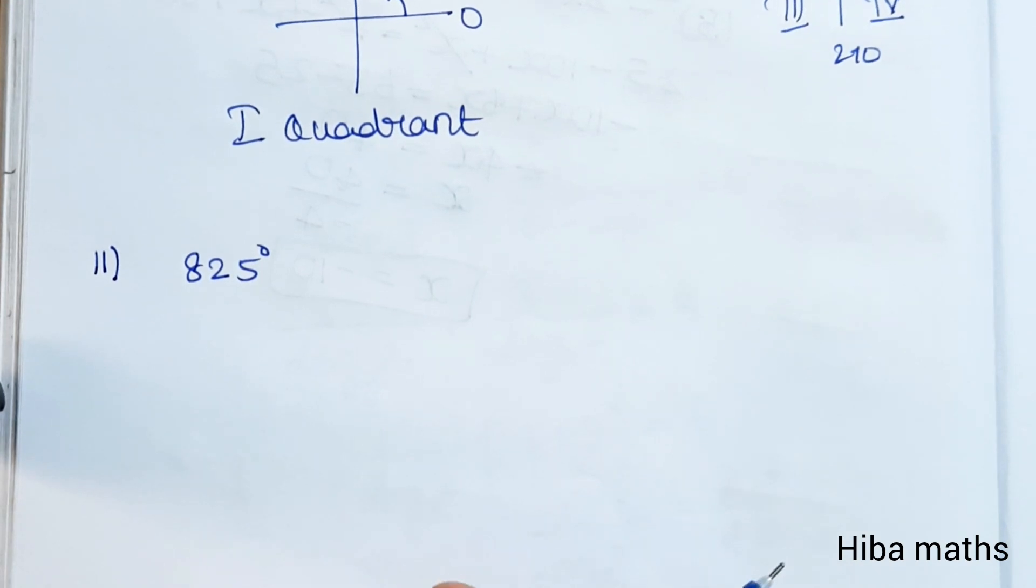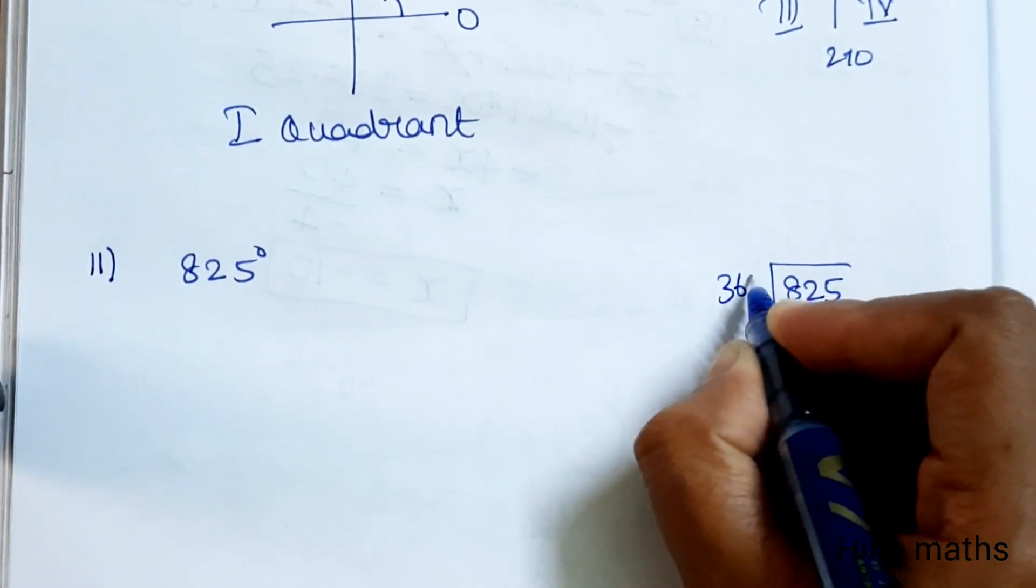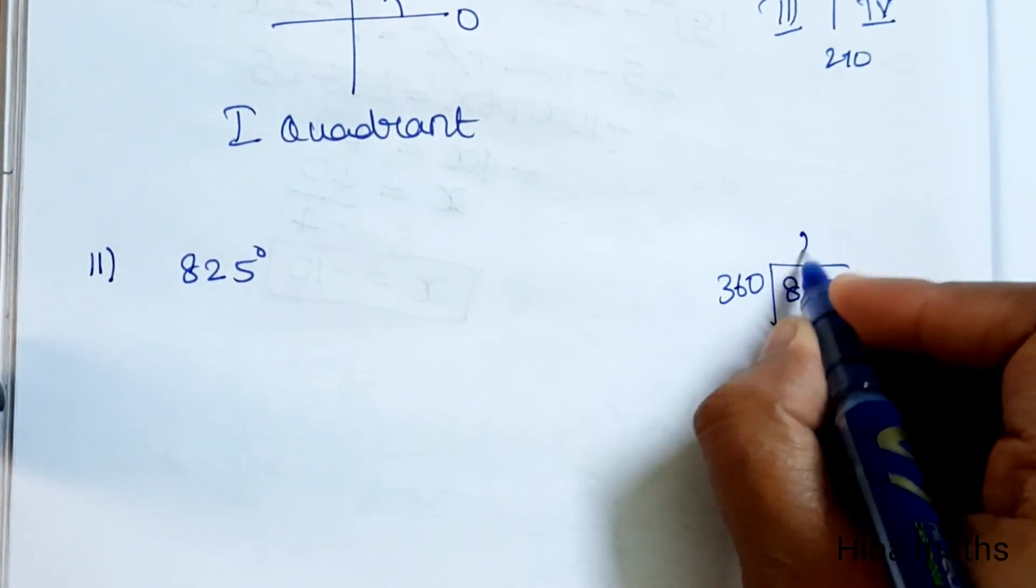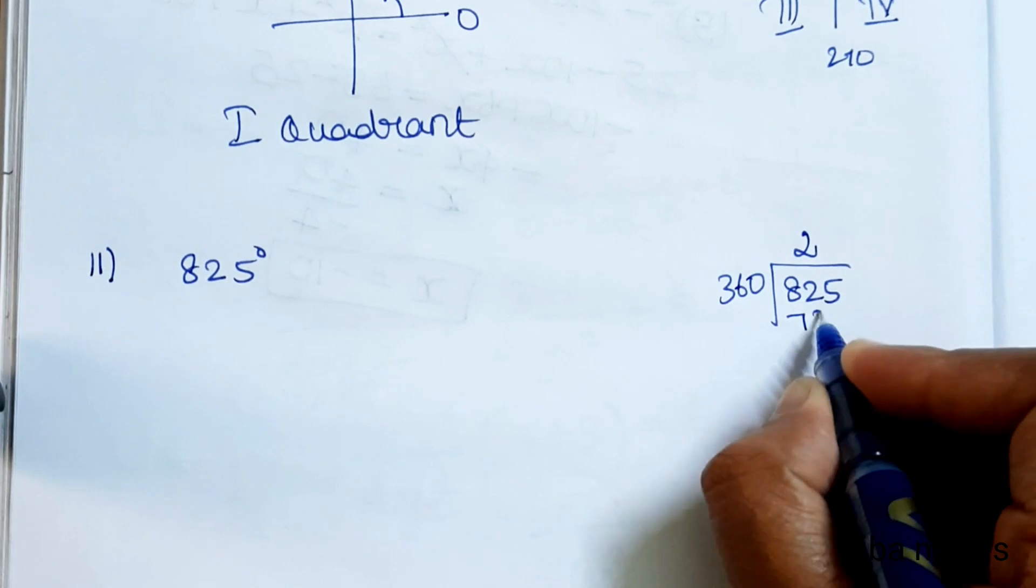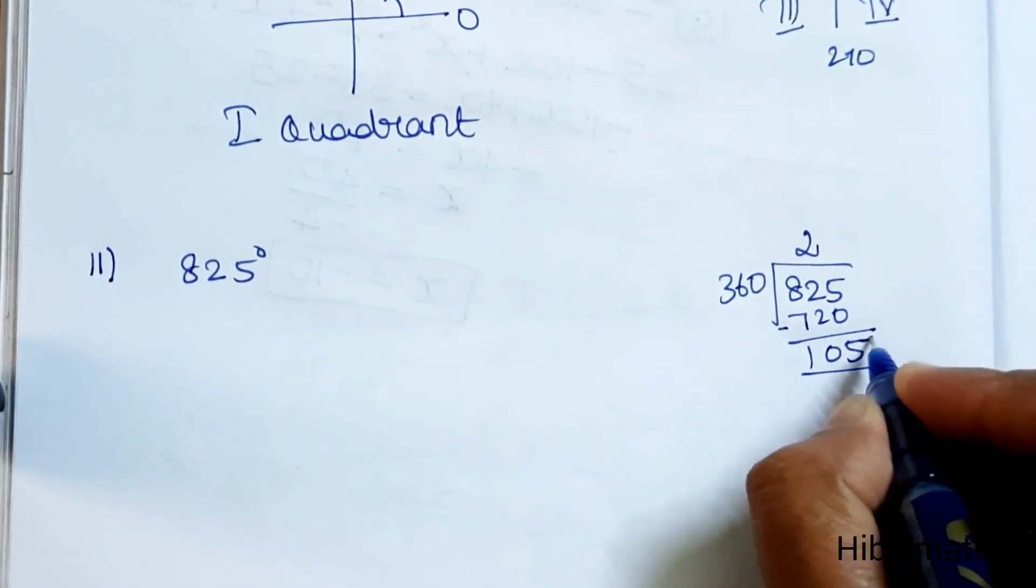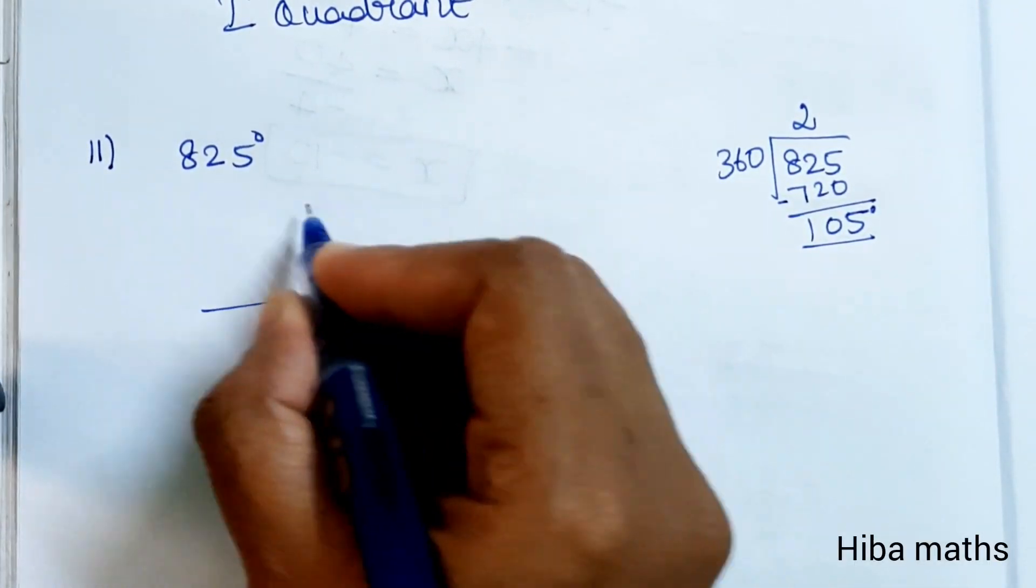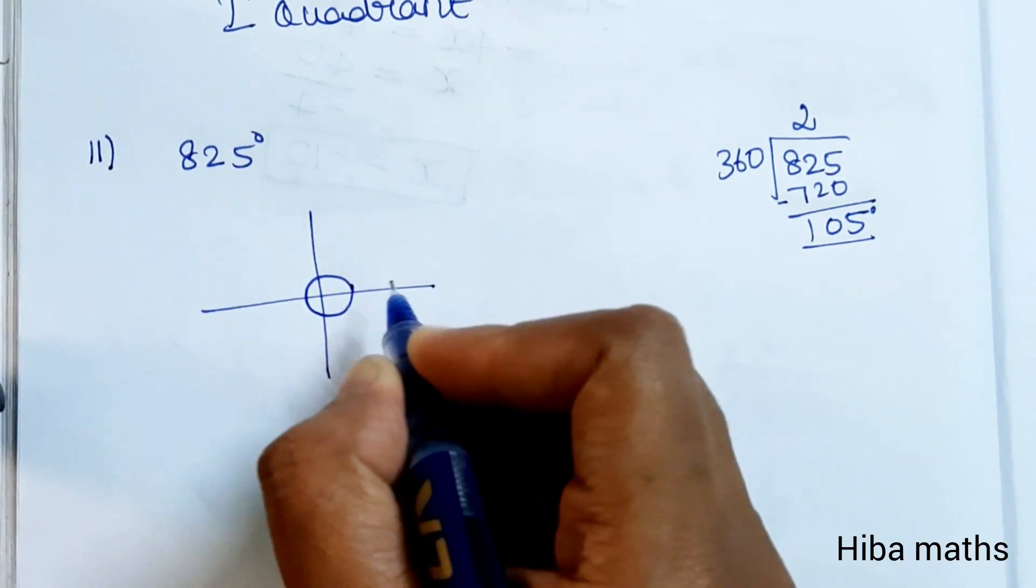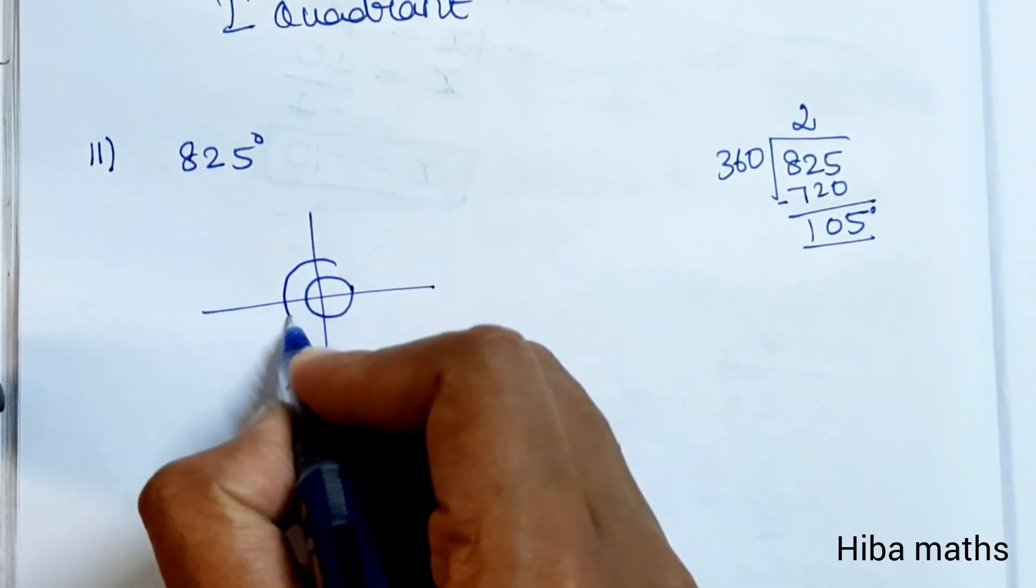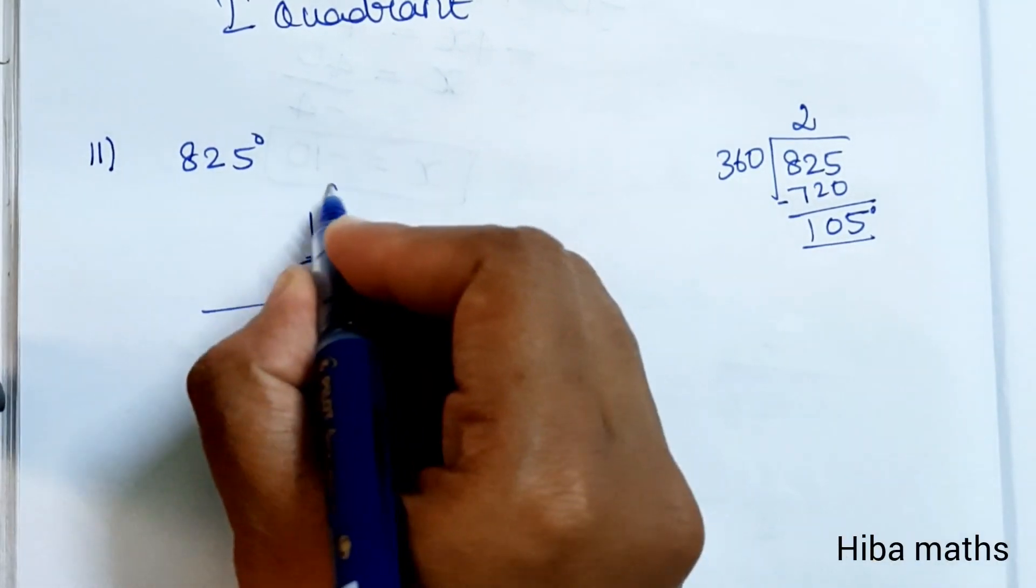Second question is 825 degrees. We divide 825 by 360 two times. 360 twice is 720, leaving 105 degrees. So after two complete rounds, we have 105 degrees remaining. Now we can see this is in the second quadrant.